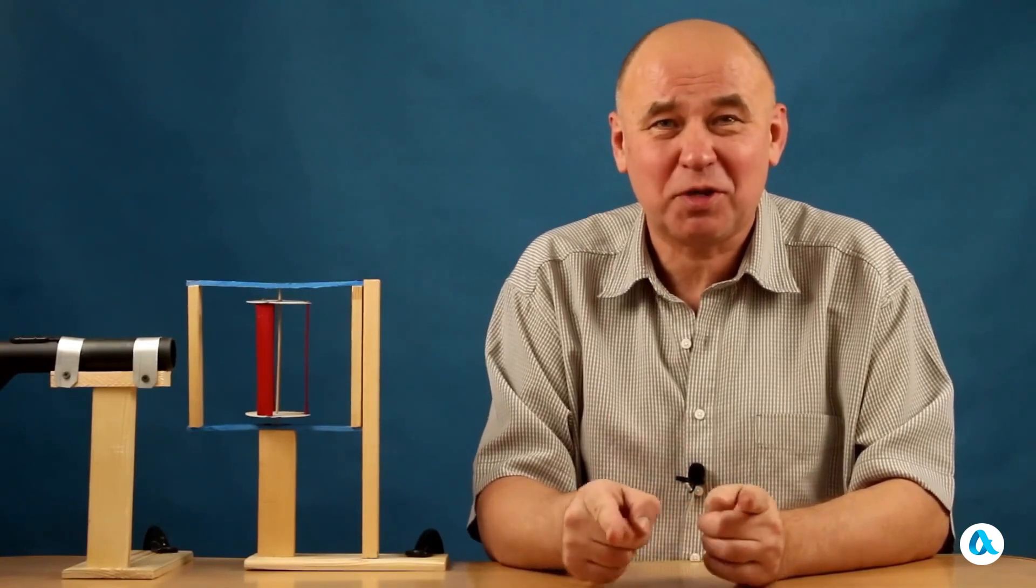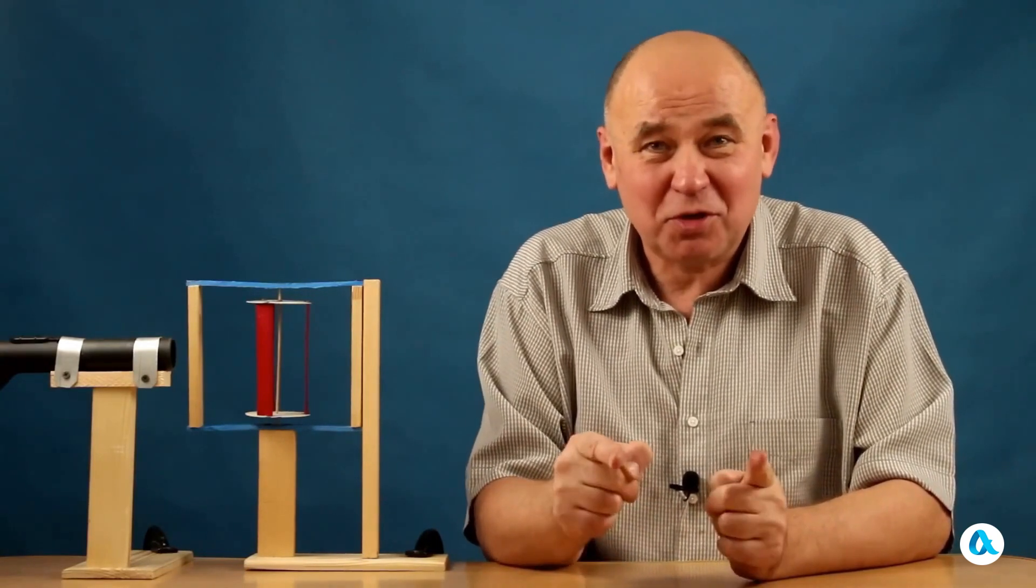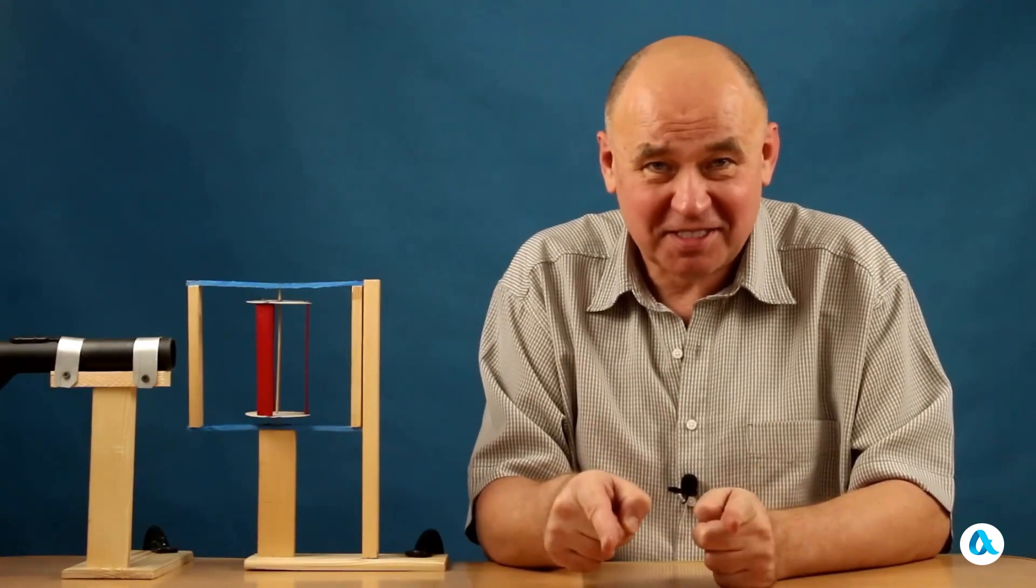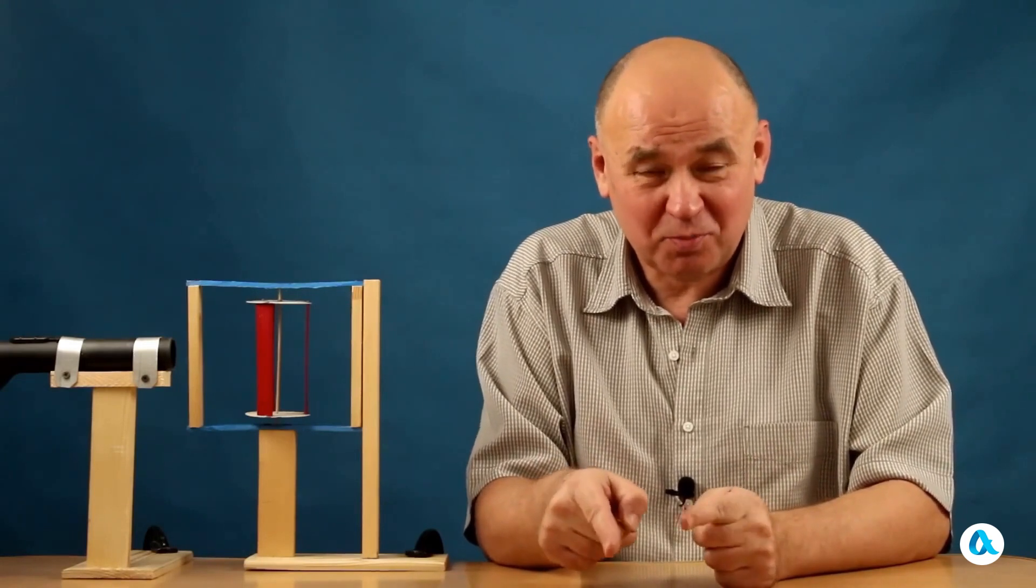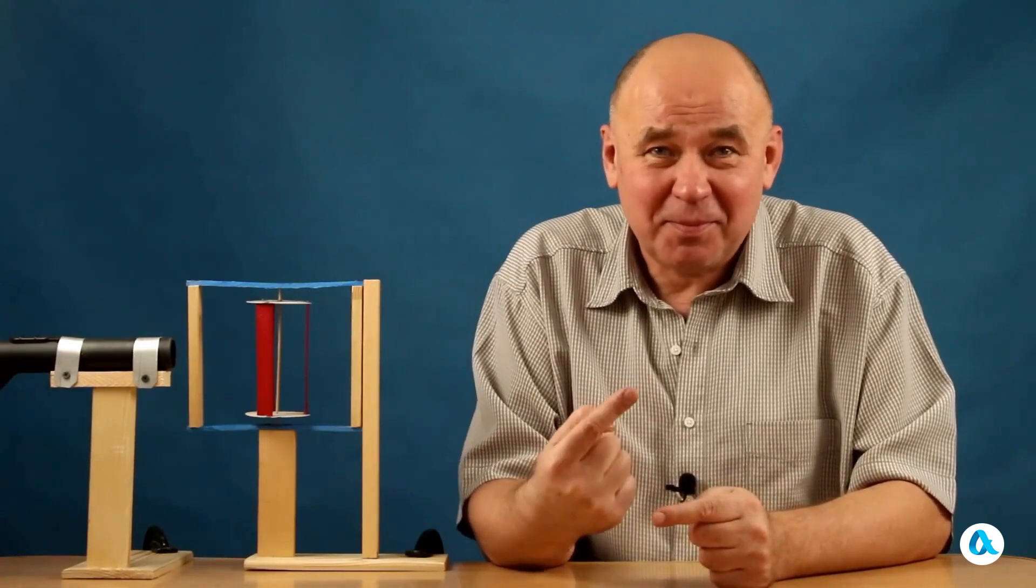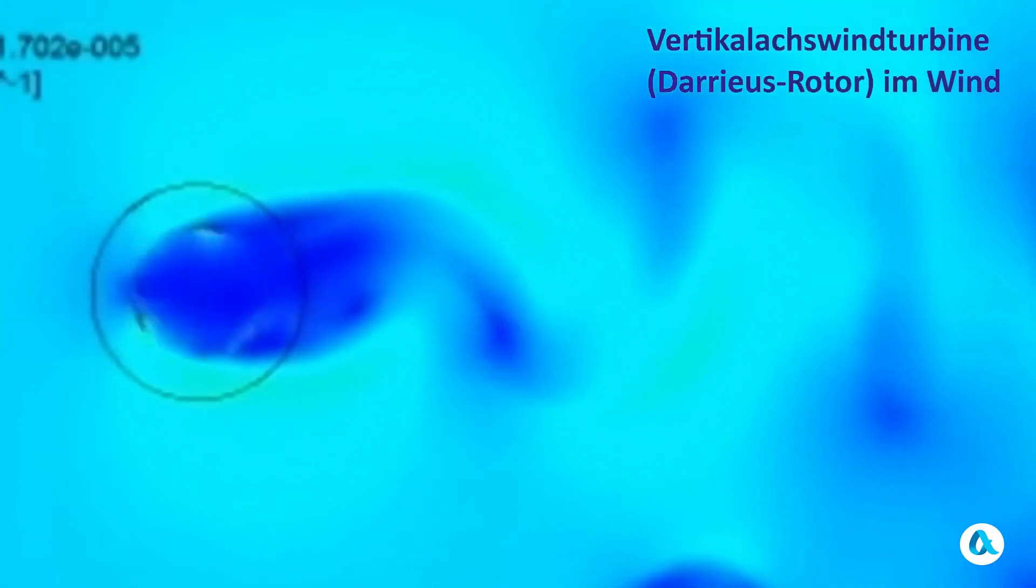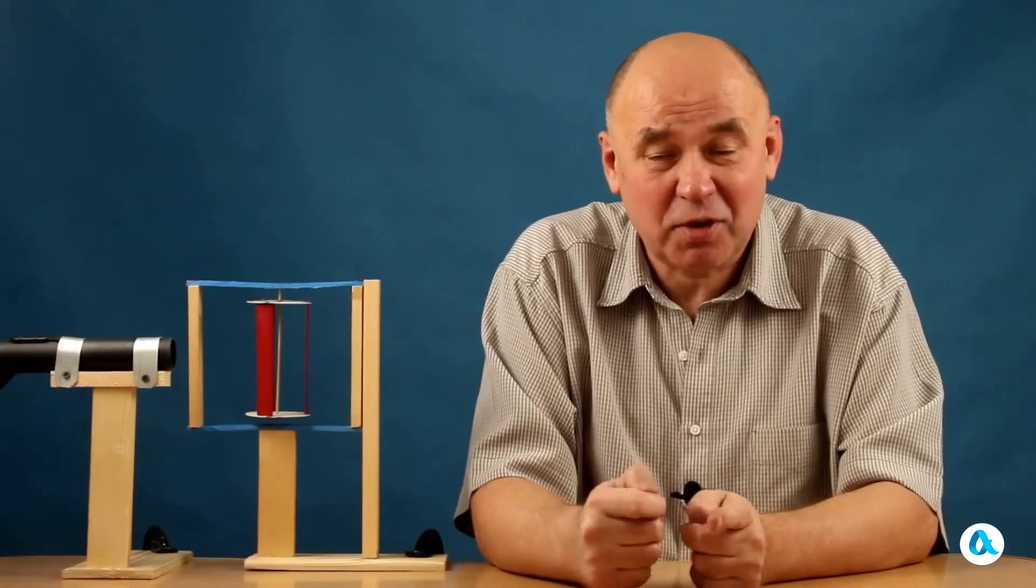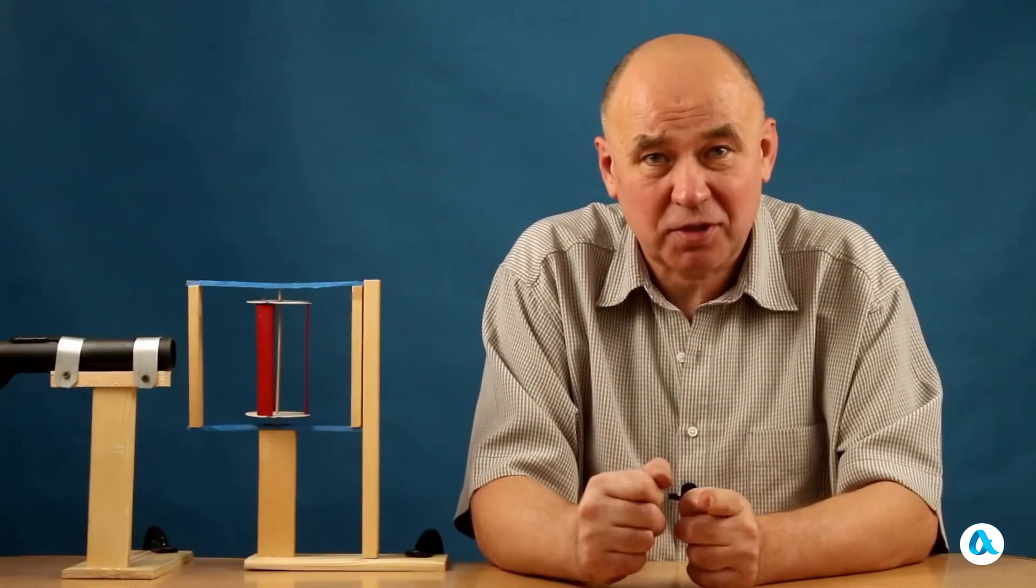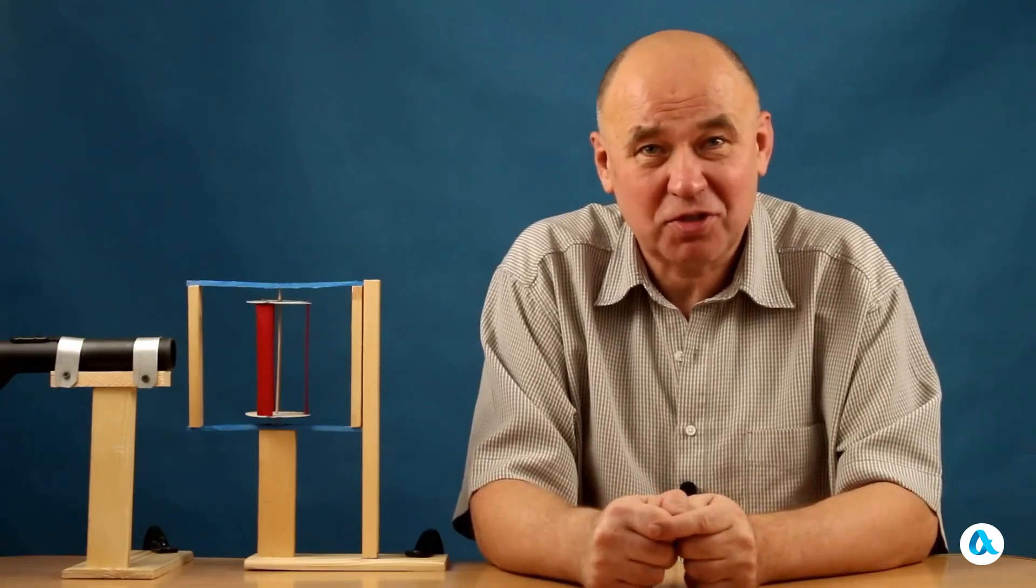And this leads to a result that may initially seem counter-intuitive. And it consists in the fact that the spun rotor moves in such a way that the linear speed of its blades exceeds the wind speed several times, as can be seen, for example, in this computer simulation. And we need to understand how this is possible. And what moments of forces spin the rotor to such speeds.